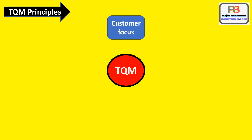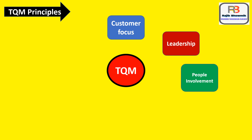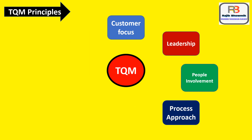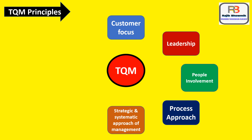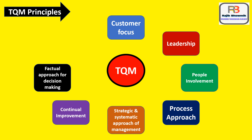Now I will tell you about TQM principles. TQM should be customer focused. Leadership plays a major role in TQM. People's involvement is very much required — everybody should get involved. Process approach should be there. Strategic and systematic approach of management is very much required. Continual improvement, that is Kaizen, is required. Factual approach for decision making means decisions should be made based on data. And mutually beneficial supplier relationship. These are the principles of TQM.